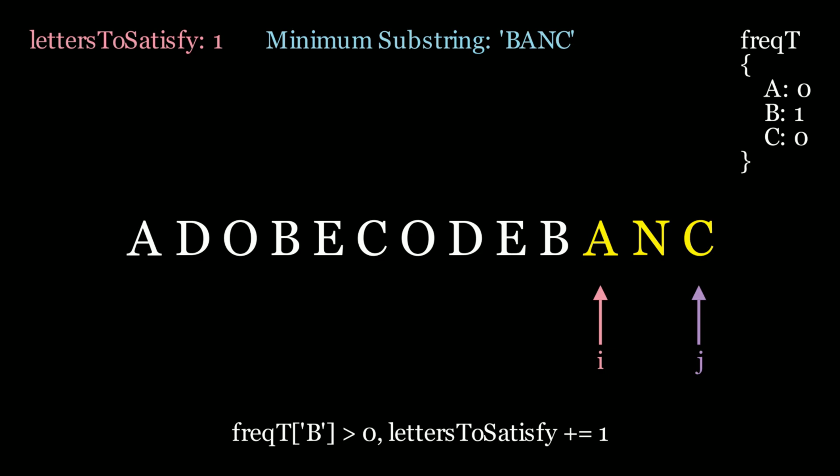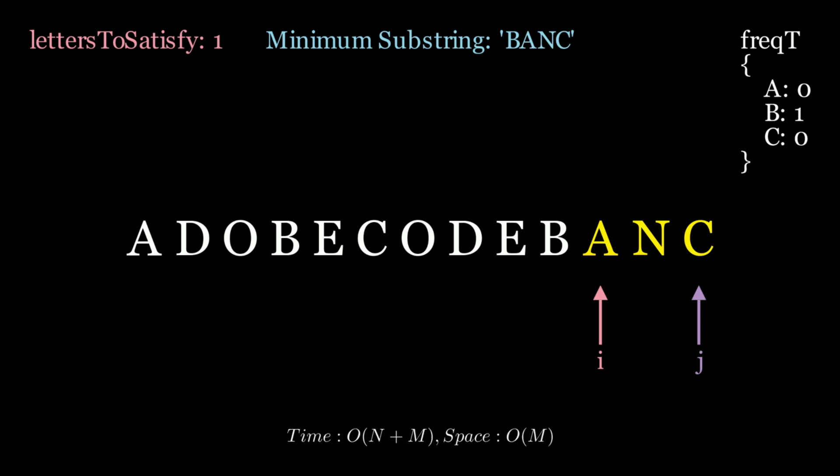What's the time and space complexity of this algorithm? This algorithm runs in O(n + m) time. O(n) is the size of s and O(m) is the size of t. We iterate through both of those strings exactly once, which is why it's O(n + m). The space complexity is O(m) — we only create one hash map, which is the size of the length of the t string.